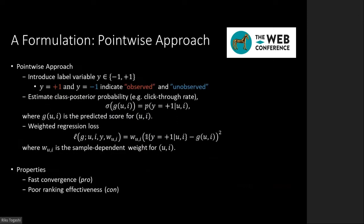There are two mainstream formulations of Item Recommendation from Implicit Feedback. The pointwise approach formulates the recommendation as binary classification, by introducing a label variable Y which indicates observed or unobserved. This approach aims to estimate the class posterior probability for a given user-item pair. A regression-based loss is widely adopted with sample weighting. The pointwise approach can achieve fast convergence in model training but often compromises ranking effectiveness.